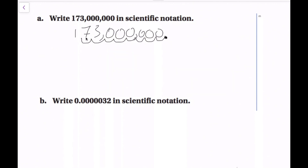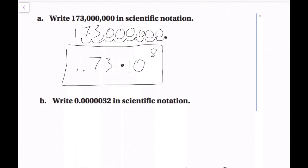Now we have 1.73, so we rewrite this as 1.73. Then all we have to do is write times 10. Let's count how many places we moved: 1, 2, 3, 4, 5, 6, 7, 8. So that means we're going to put 8 as the exponent. The reason it is positive 8 is because this is a really big number. Since we moved the decimal to the left, it is a positive exponent. So 1.73 × 10⁸ is our answer in scientific notation.